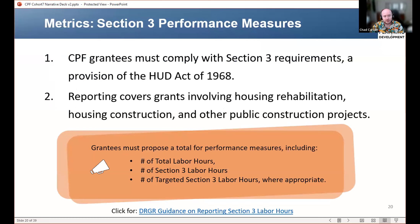The next slide is about section three performance measures. CPF grantees need to comply with section three of the Housing and Urban Development Act of 1968, which directs HUD funding towards targeted workers — disadvantaged workers — in the communities where a project is being implemented. Specifically, it covers grants that involve construction: housing rehab, housing construction, or other public construction projects. In general, if you're building something, it's going to be covered by section three.